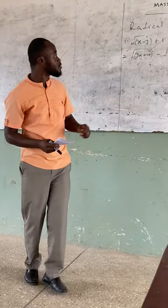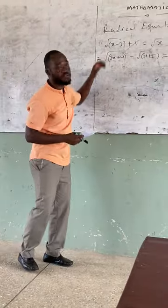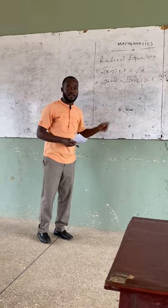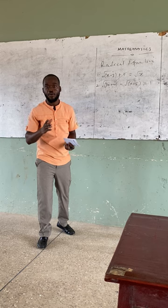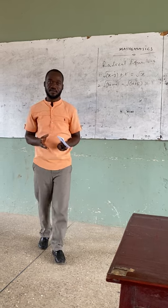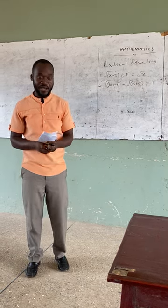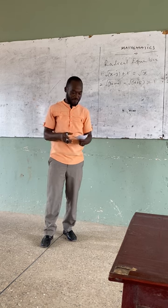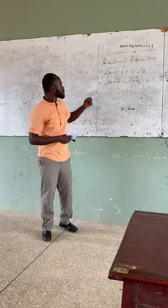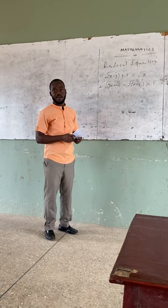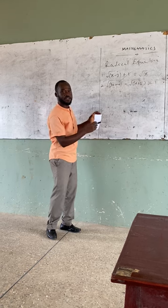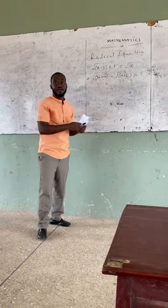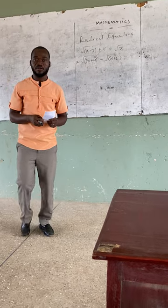Our task today is to learn how to solve such an equation. In solving a radical equation, you have to go through four basic steps. I want you to write the steps down because we will use them in solving. The first step: isolate one of the radicals, meaning put it on one side of the equation and all other terms on the other side.